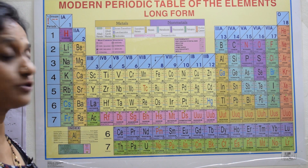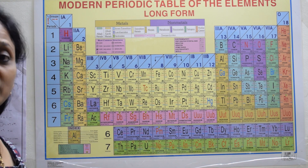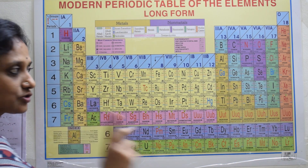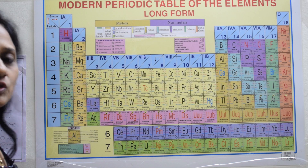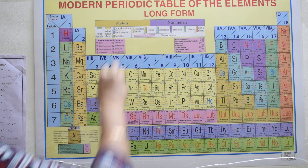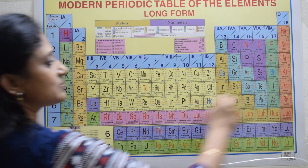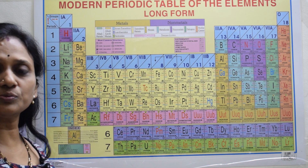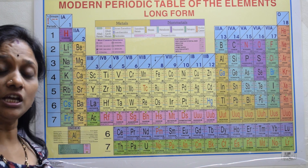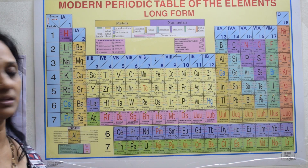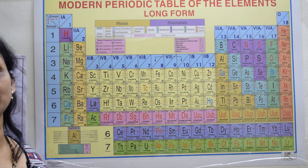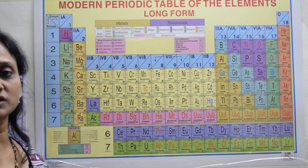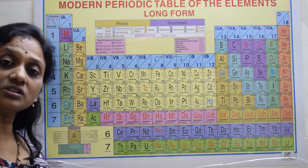The second limitation is the position of isotopes. Hydrogen has three isotopes, and chlorine has two isotopes (35 and 37). Since isotopes have the same atomic number but different mass numbers, the modern periodic table could not clearly assign positions for isotopes.